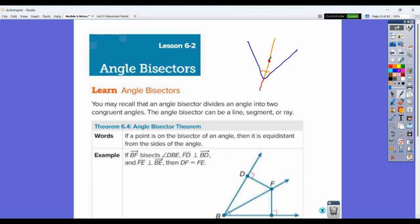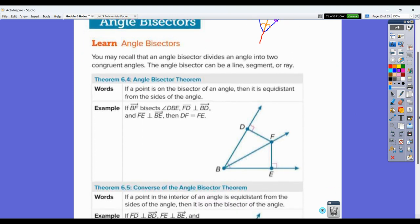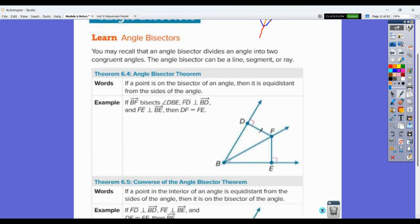Now if you remember, we've talked about the distance from a point to a line, or a segment in this case, which the side of the angle is a segment, and that has to be perpendicular. So I'd have to go perpendicular to this side over here, and then perpendicular to this side over here, and in order to do that, then I know that those are congruent to each other.